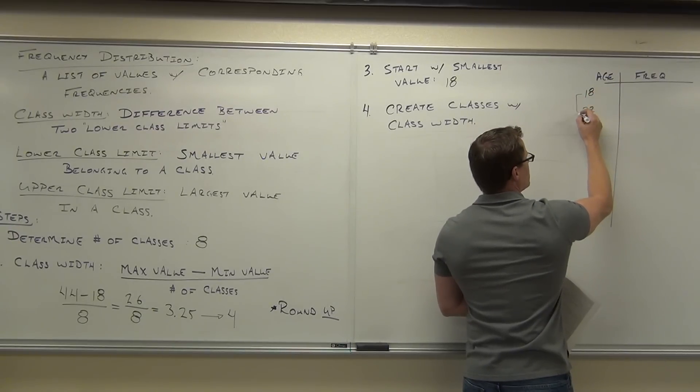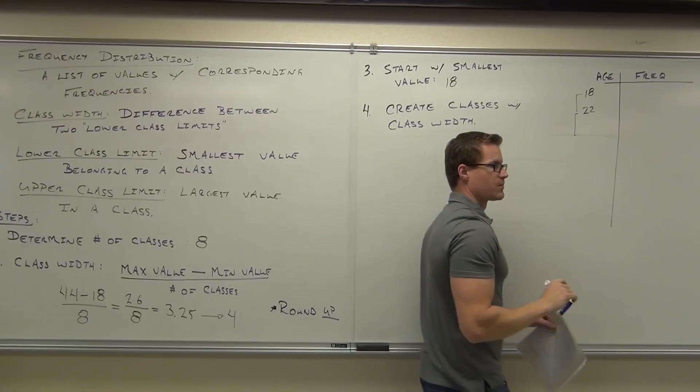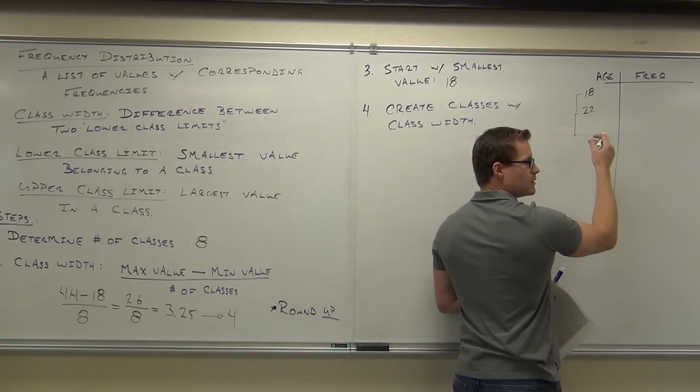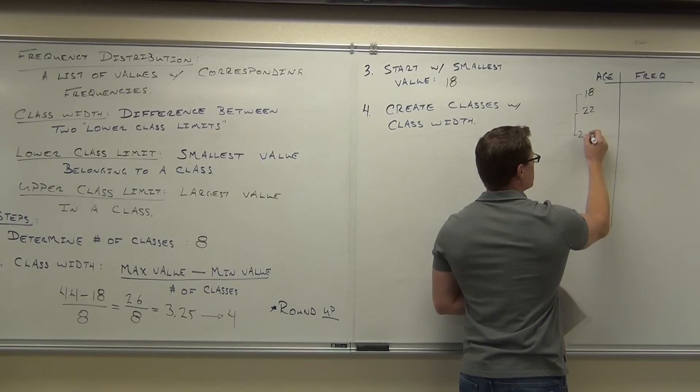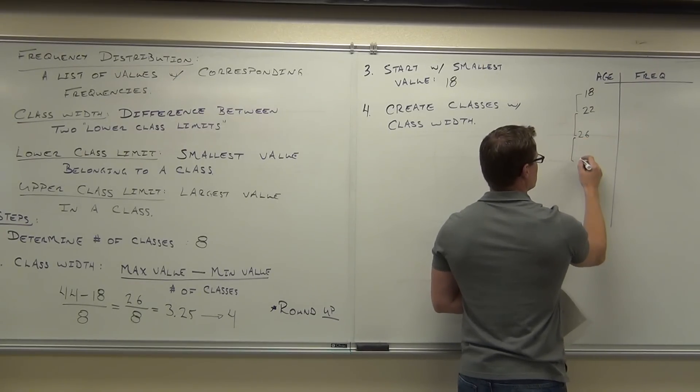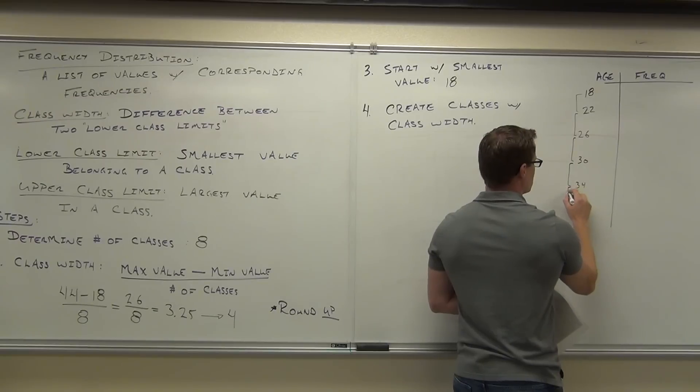So this is the way we do this. We go four here, and then we're going to create eight classes from here on out. So 18 to 22, 22 to what? 26. Remember, a class width is four. How many classes? And then again to? 30. And then? 34. How many classes do we need? Eight. Perfect.